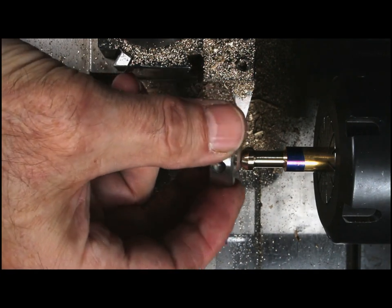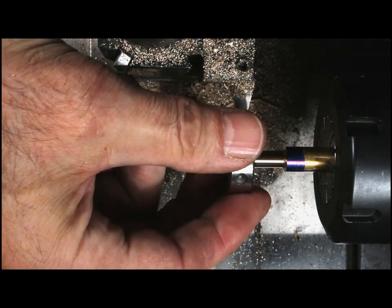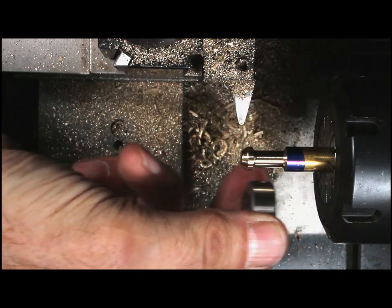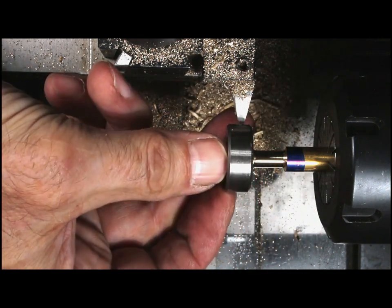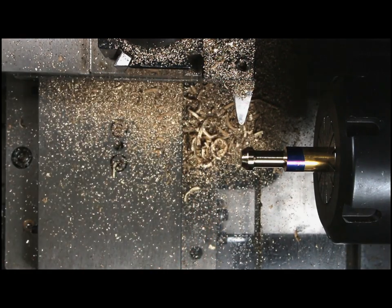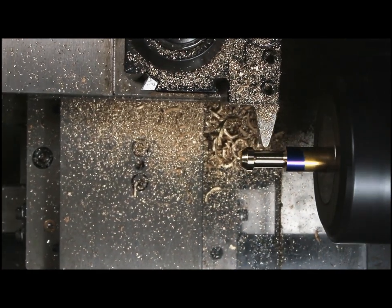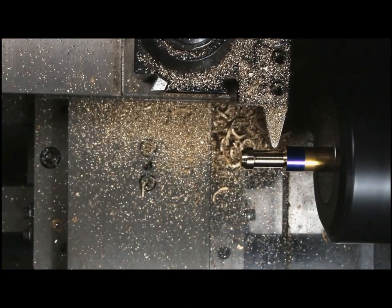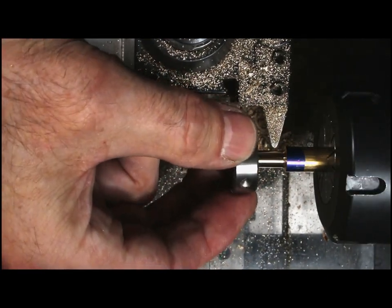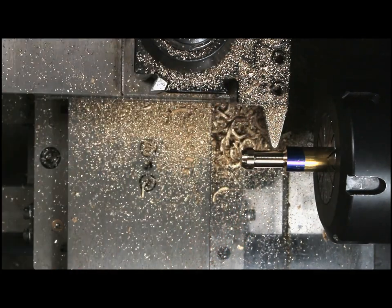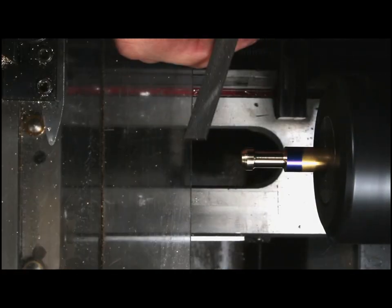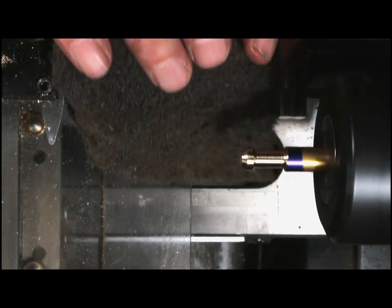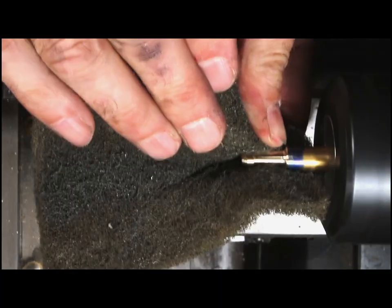And here is the die that I'm going to be using, and I'm just checking to see if it'll fit over the end, and no it doesn't. It's going to thread back over here on the right, and so I just need to clear this down a little bit more so it will slide over there. And yeah, that works. So I'm just going to clean that up a little bit with a file. Some Scotch-Brite, make it look shiny.